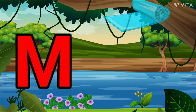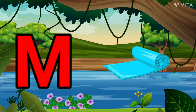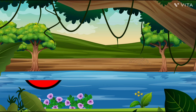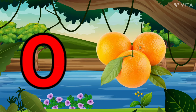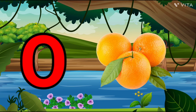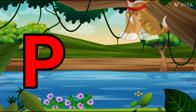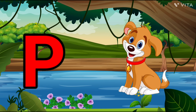M is for Mat, M-M-Mat. N is for Net, N-N-Net. O is for Orange, O-O-Orange. P is for Pet, P-P-Pet.